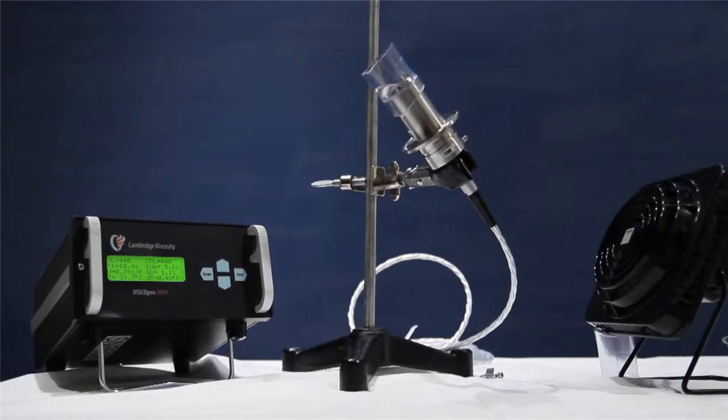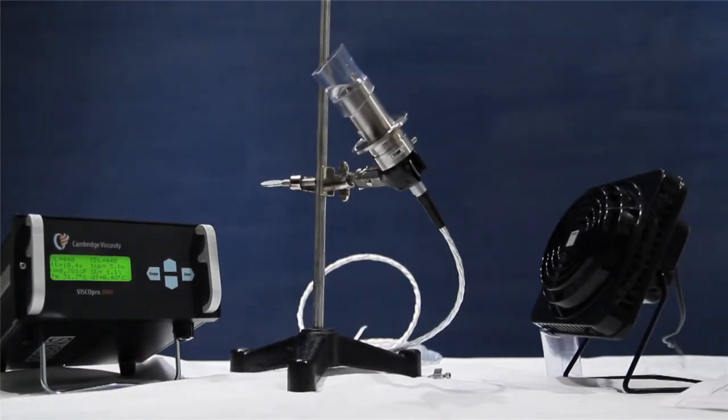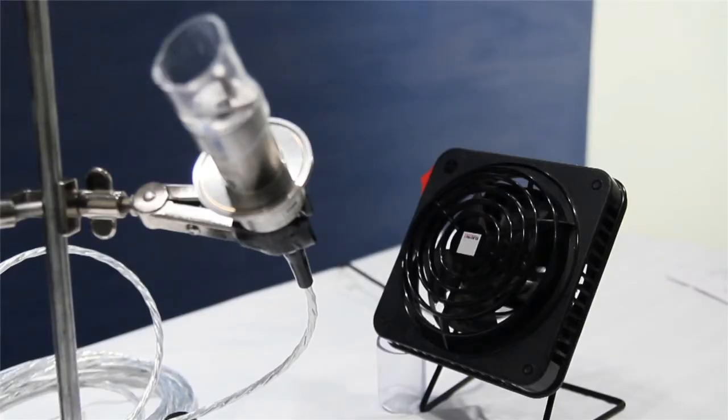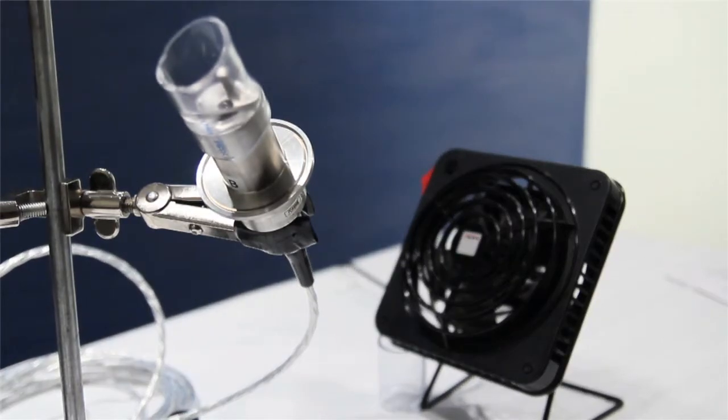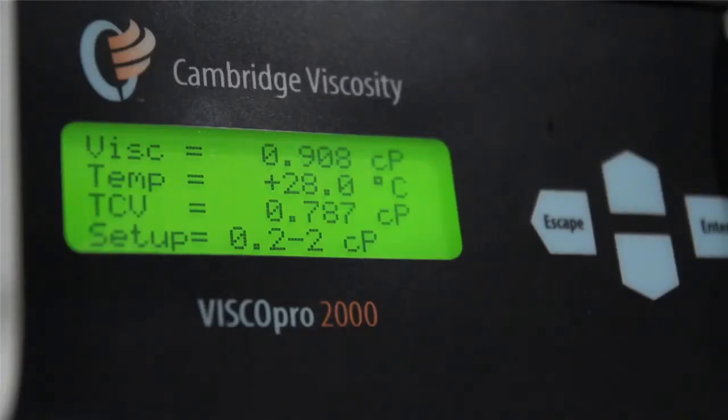Step 3. Place a small desk fan a short distance from the sensor. The fan is used to mimic fluid flow around the sensor and to assist it to reach thermal stabilization. The sensor will now thermally stabilize. This should take 5 to 10 minutes.